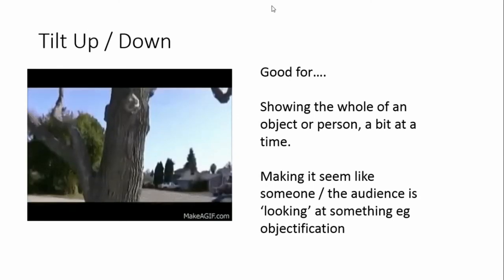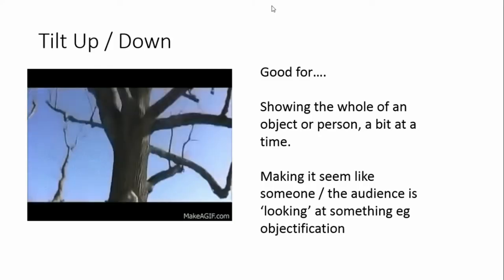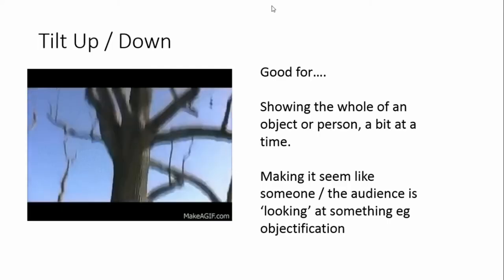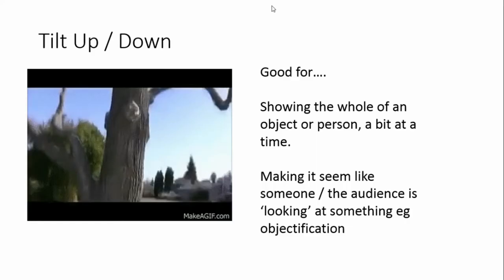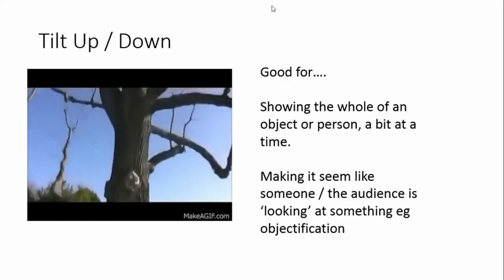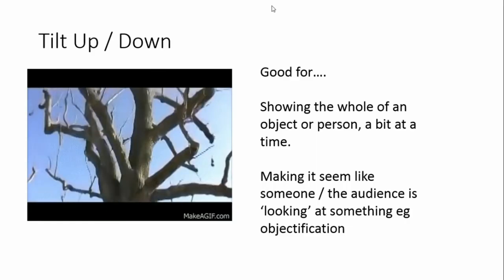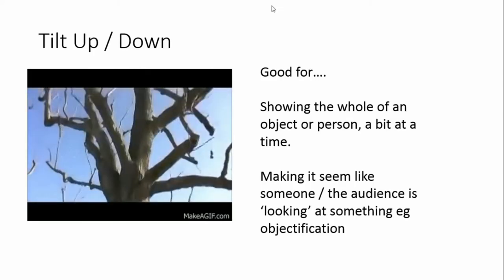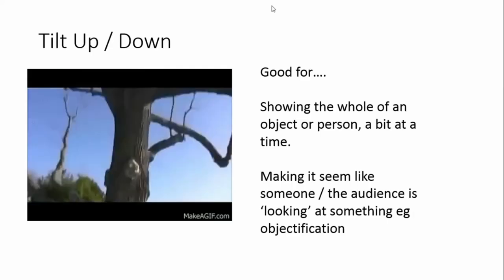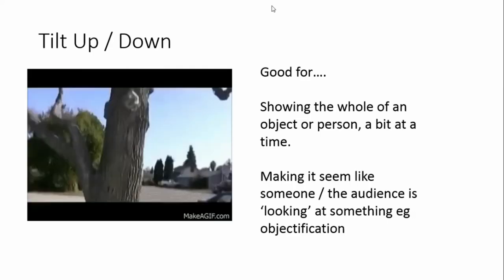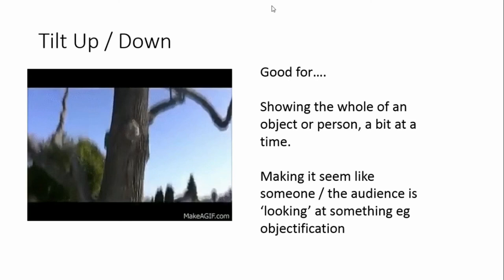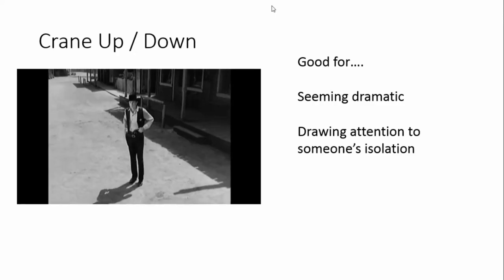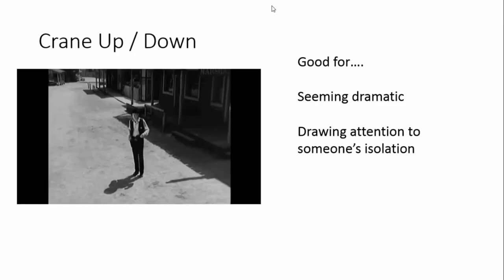You can also get a tilt up or tilt down. Again, your camera stays in one place but this time it looks up or down rather than left or right. A tilt shows us the whole of an object or person a bit at a time — for example, starting at the bottom of a tree and going up to the top. When done with a person it can feel like we are looking at their body, which can be quite objectifying — you see it quite a lot in music videos.